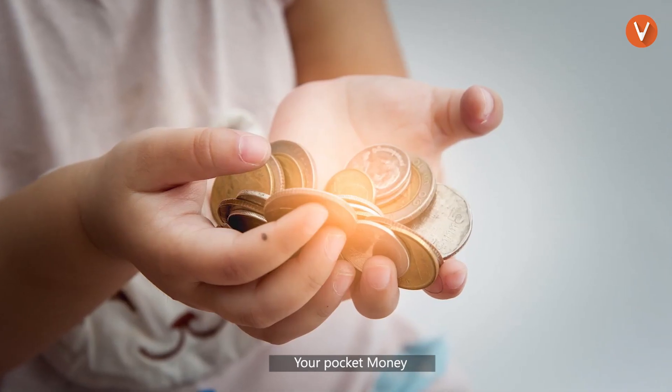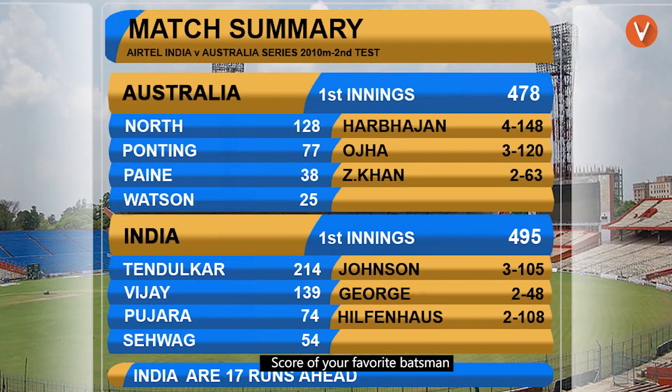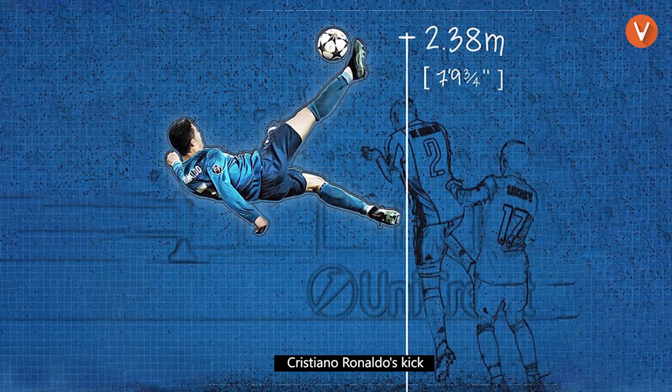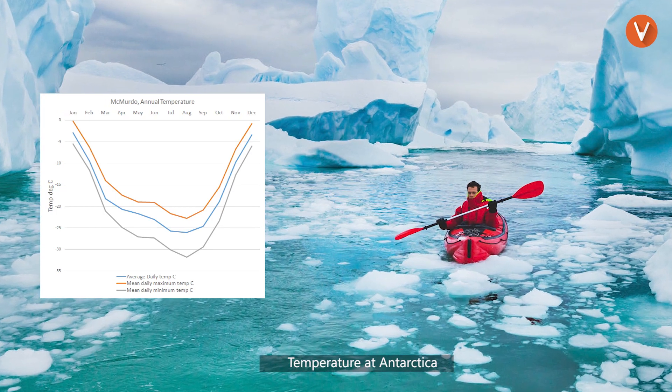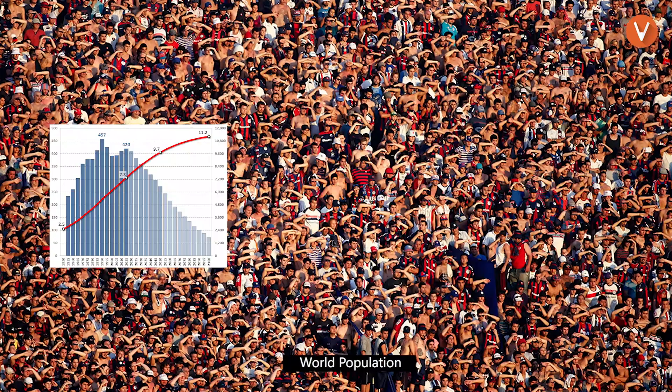Your pocket money, the dice you roll, the card that you play, score of your favorite batsman, Cristiano Ronaldo's kick, speed of a car, temperature at Antarctica, age of the Great Pyramids, world population.